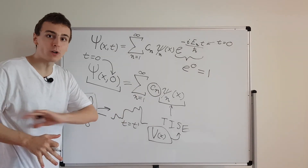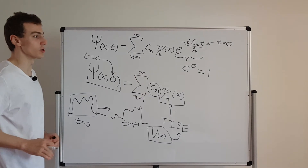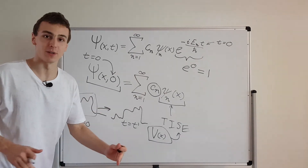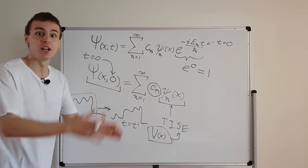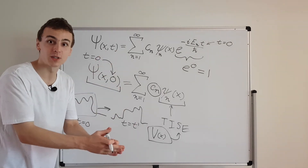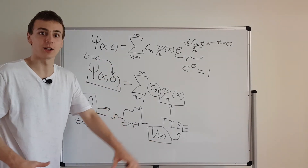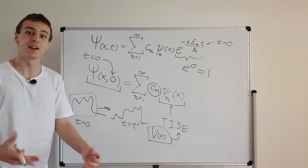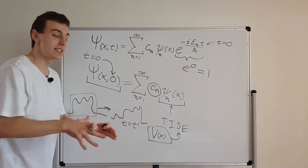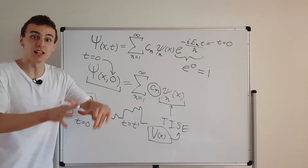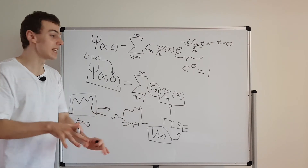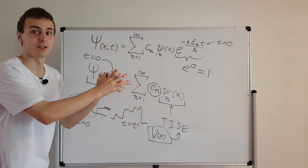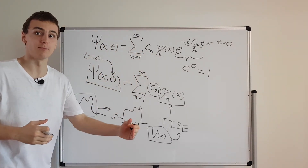It doesn't matter what time it is — we're going to know exactly what the wave function will do, right up until we make a measurement. The moment you measure the wave function, you collapse it to a spike and this formalism no longer applies; things get more complicated. But as long as the system is left undisturbed, it will evolve according to this equation.